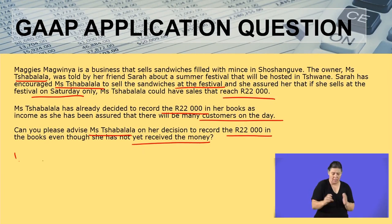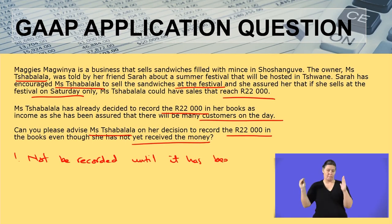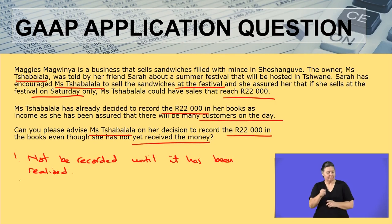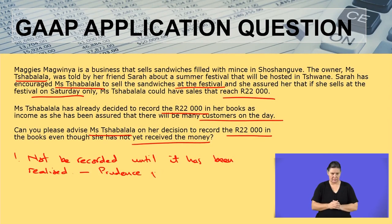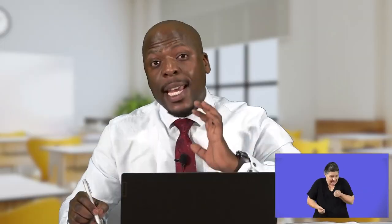The money must not be recorded until it has been realized — that is, until we have received the money. This is in accordance with the prudence principle. We must not record any income unless we have received it. The 22,000 can only be recorded when we have received it, not when we have not even gone to the place to make the sales.